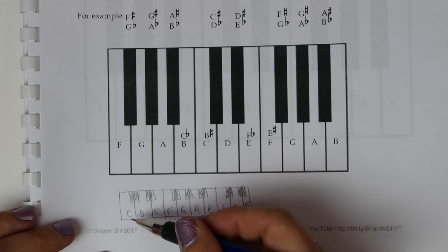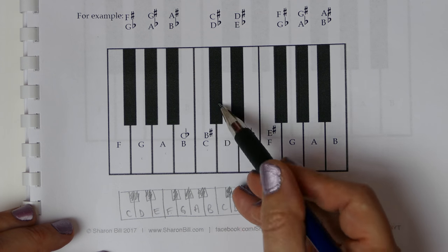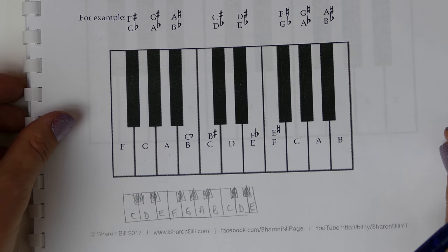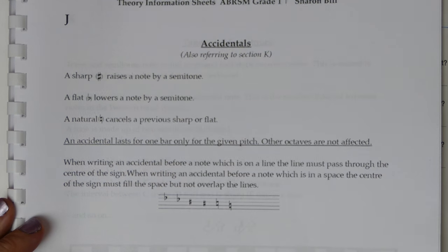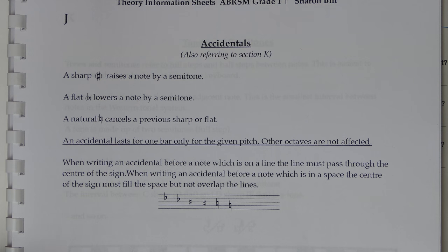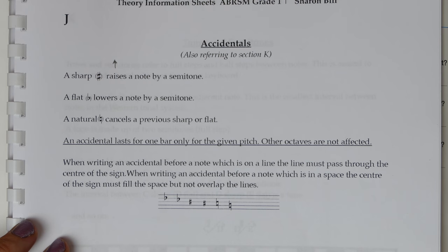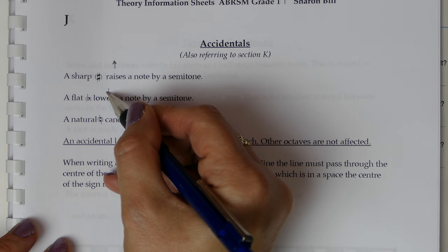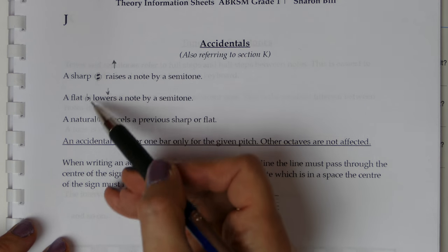Now we've established what a semitone is as in the absolute next door notes on the piano keyboard of course that translates to any instrument but it's just easiest to see it on the piano keyboard so now let's think about sharps flats and naturals which affect the notes that they are written next to so a sharp which looks like the hashtag symbol, I assure you the sharp sign was there first, it raises a note by a semitone so we're just going to raise the note up to the very next semitone.